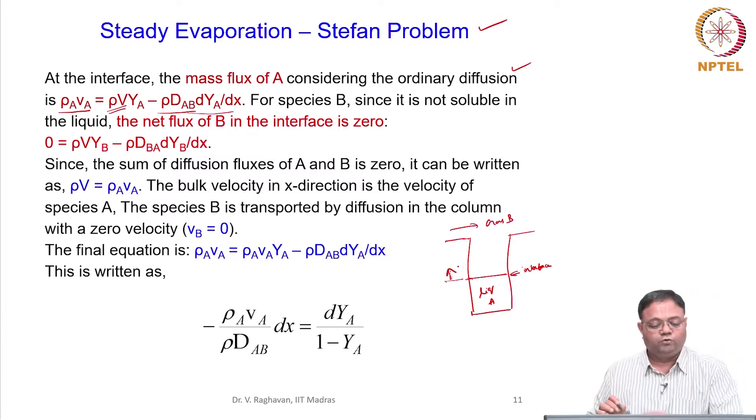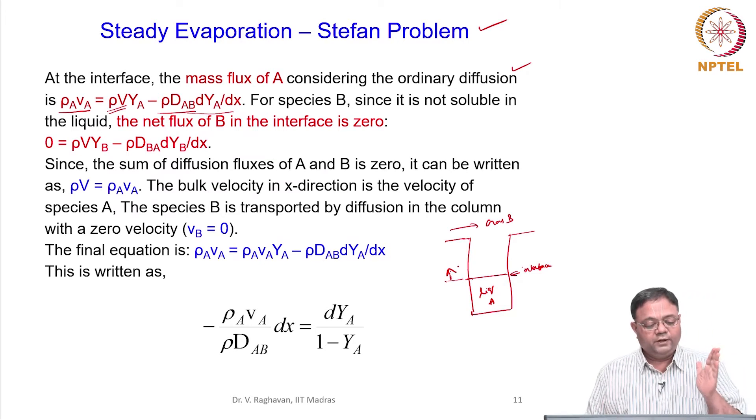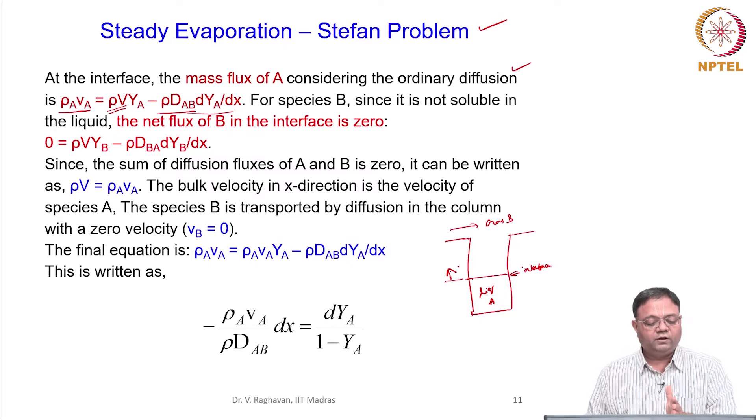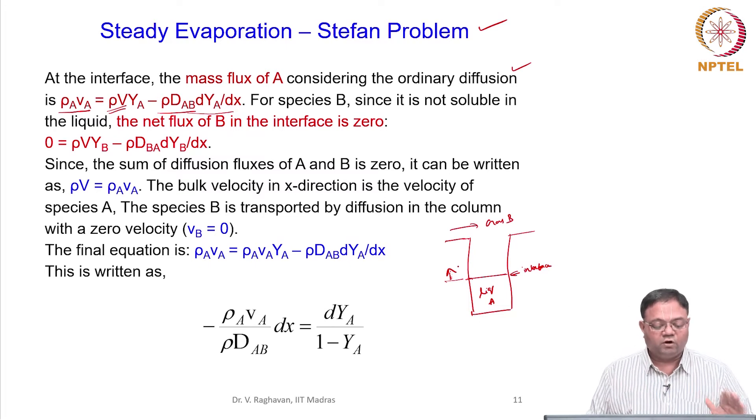Negative times negative will be positive. We are trying to add the convective flux and the diffusion flux to get the total flux of A at the interface.